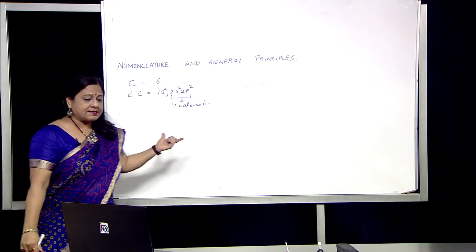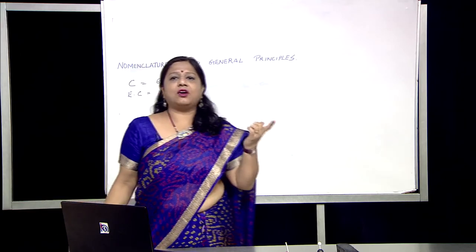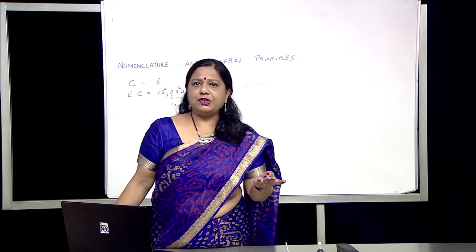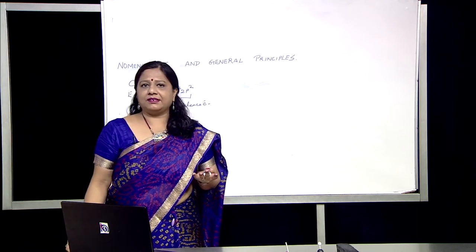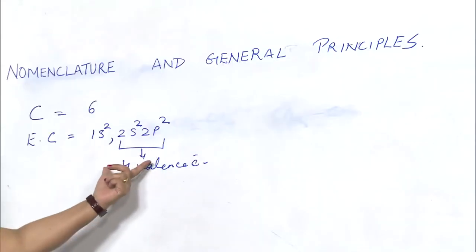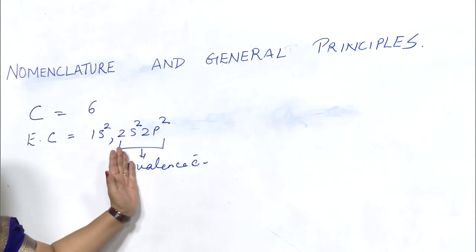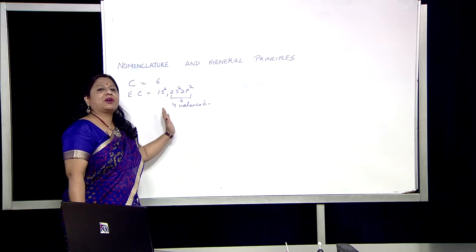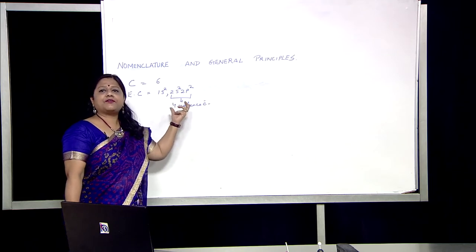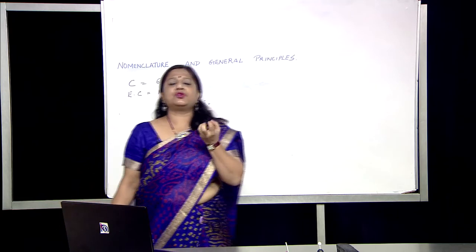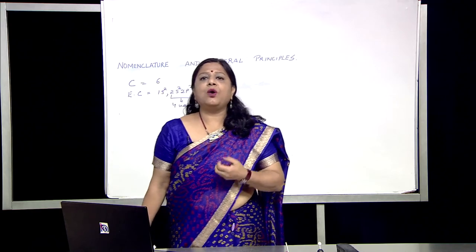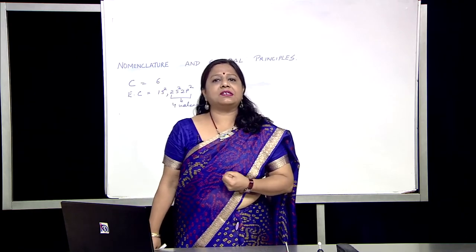Now carbon needs 4 more electrons to complete its octet. Either it will take 4 more electrons or it can give 4 electrons to satisfy its octet or duplet. But carbon does not do any of this. Why? Because it is very difficult for carbon to lose all 4 electrons as it requires higher energy. On the other hand, if it accepts 4 electrons, it becomes very difficult for the nucleus of the carbon atom to hold all 10 electrons together. Therefore, as a result, the carbon atom forms 4 covalent bonds by sharing valence electrons with other atoms. This is known as tetravalency of carbon.